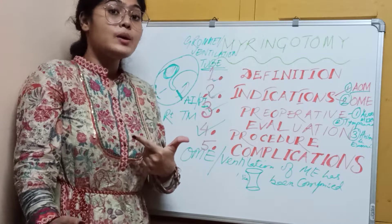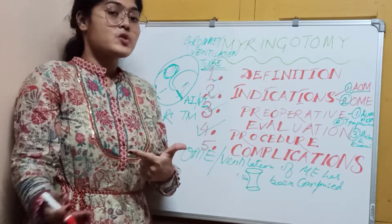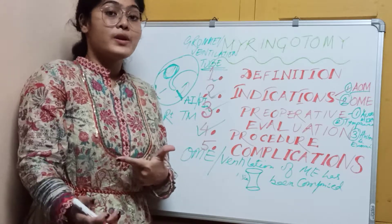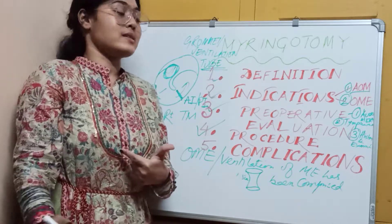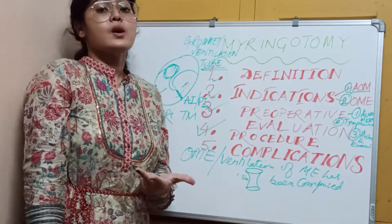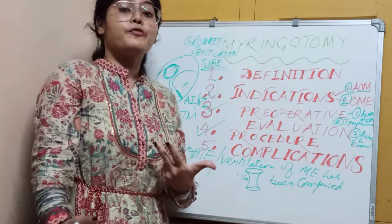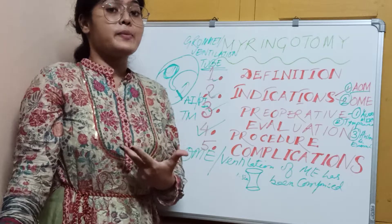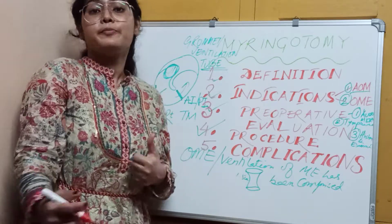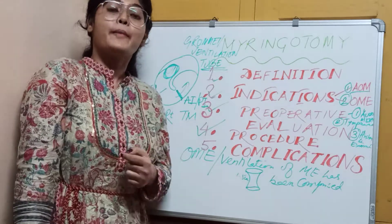Any perforation that occurs naturally is difficult to heal and might turn into chronic otitis media — we do not want that. Number three is when, in cases of acute otitis media, complications might be taking place, like facial nerve paralysis. In those cases, we go for Myringotomy.